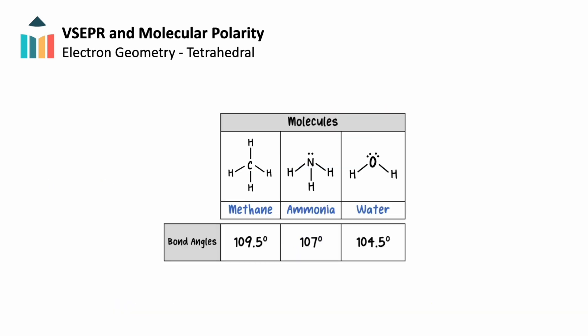We see these bond angles show up in our structures for methane, ammonia, and water, with water having the smallest bond angle as it has the most non-bonded pairs of electrons, and methane with the largest bond angles as each of its domains are bonded.